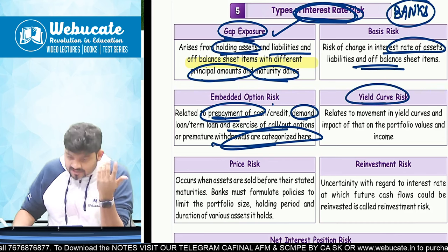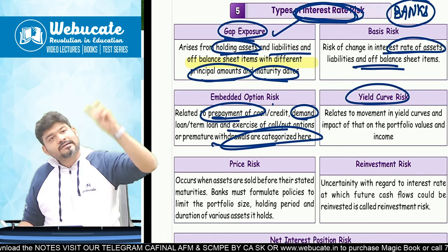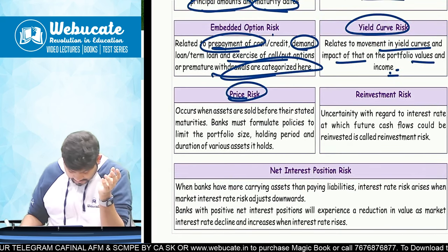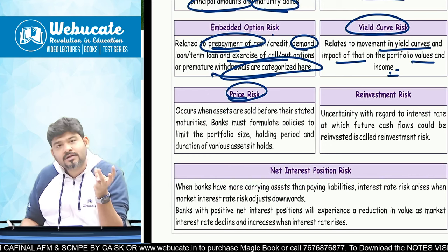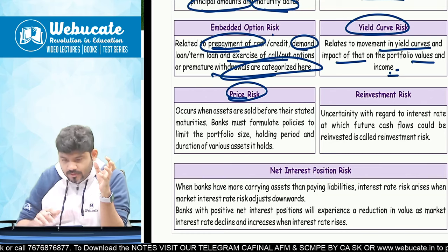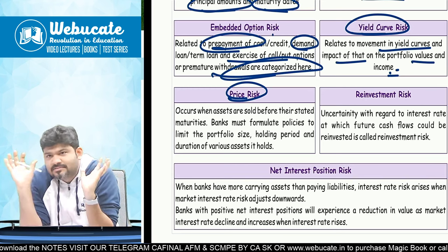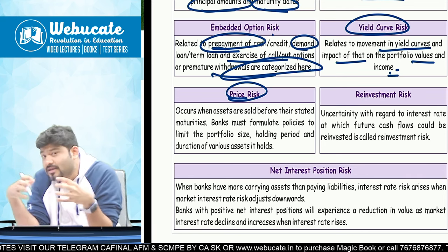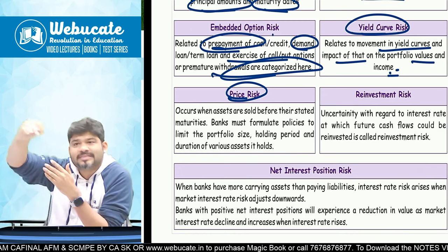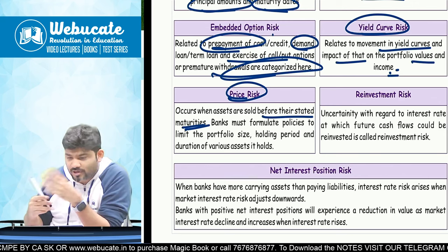Yield curve risk is dependent on the market — what rates are prevailing in market bonds — and relates to movement in yield curves and impact on portfolio values and income. Then there is price risk: if assets are sold before their stated maturities, it gives rise to price risk. For banks, assets are their receivables — if there is an NPA (non-performing asset), they may have to sell certain assets before their stated maturity. Cooperative banks fail because they cannot manage these interest rate risks, whereas banks like HDFC, Axis, and ICICI are much better at managing them.